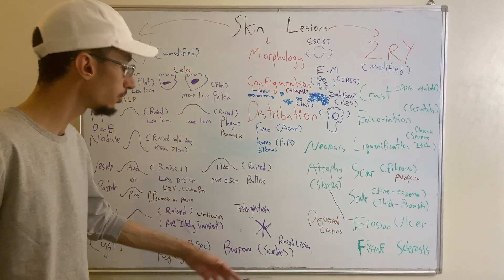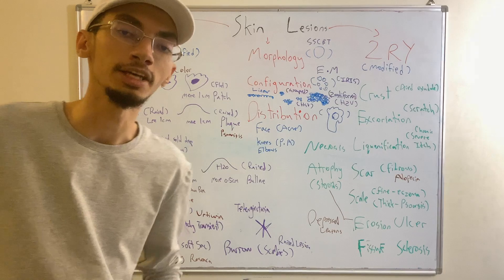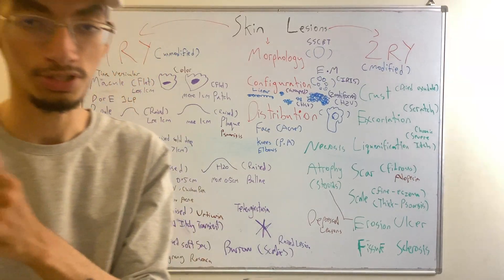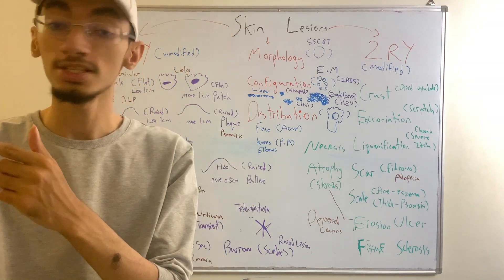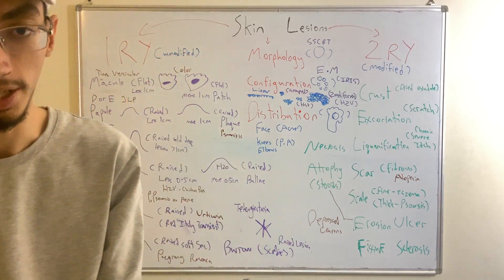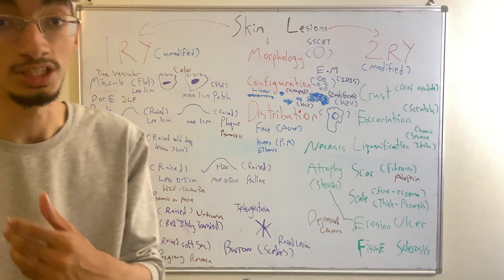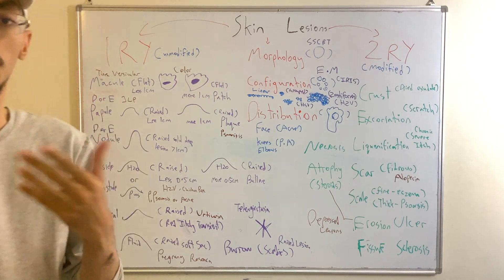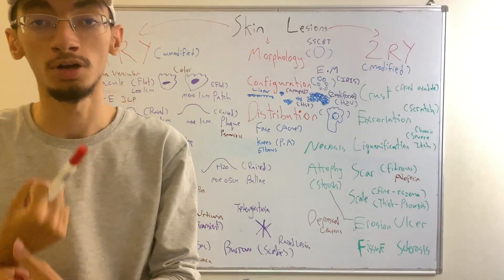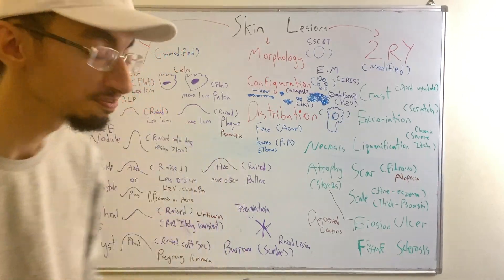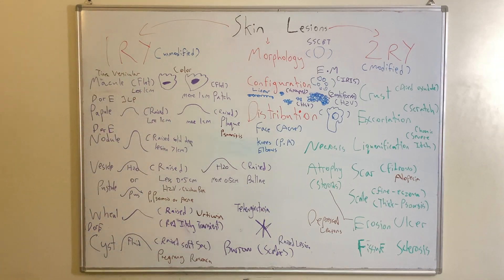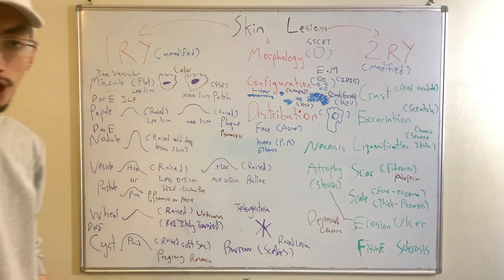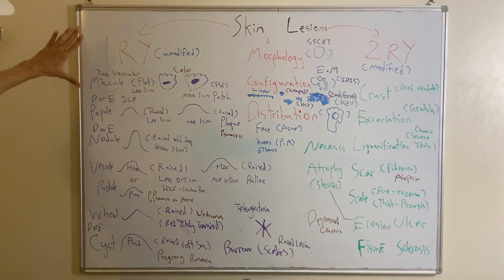The last raised lesion is a burrow. A burrow is associated with scabies, particularly around the wrist, though the wrist is also a site for contact dermatitis. So burrows in the context of scabies are an important raised primary skin lesion. When looking at any picture, remember to go through morphology, configuration, and distribution to identify the lesion.